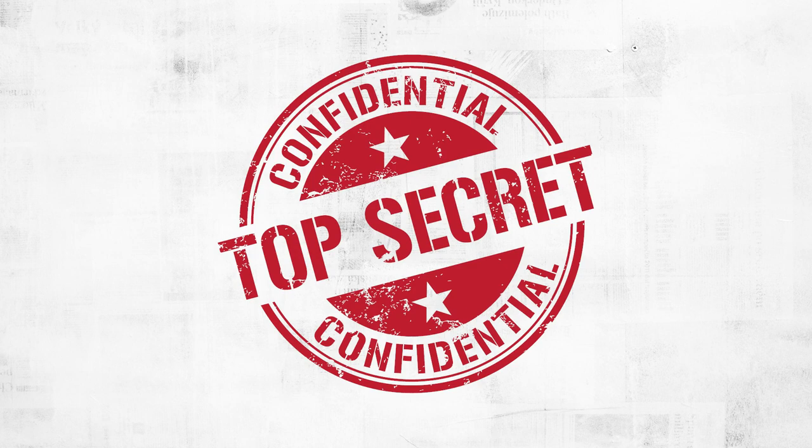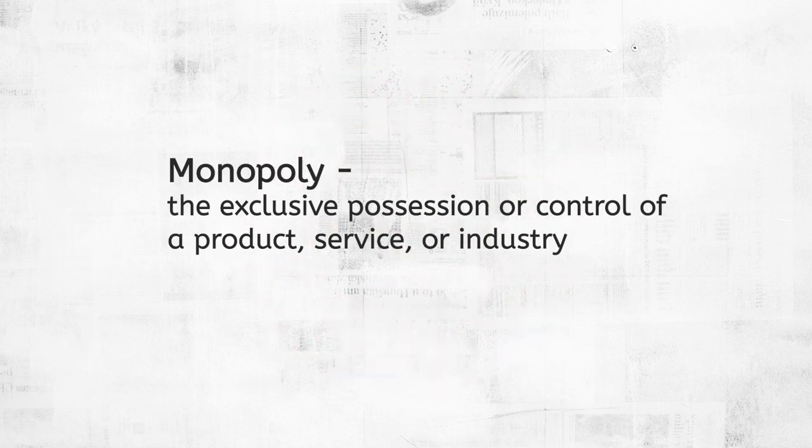Britain tried to keep a tight lid on its industrial secrets to protect its monopoly on industrialization. A monopoly is the exclusive possession or control of a product, service, or industry. Britain tried to prevent engineers and skilled workers from leaving the country or sharing information. Clearly that plan didn't work. Eventually industrialization did spread, though not evenly or equitably around the globe. But how did industrialization spread? Let's examine a few examples.